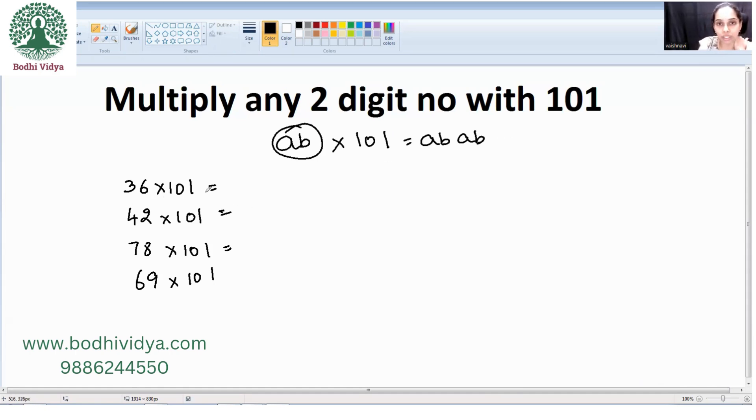So, 36 into 101 is what? 3636. This is AB and so it is AB. 42 into 101: 4242, AB, AB. 78 into 101: 7878. 69 into 101: 6969.